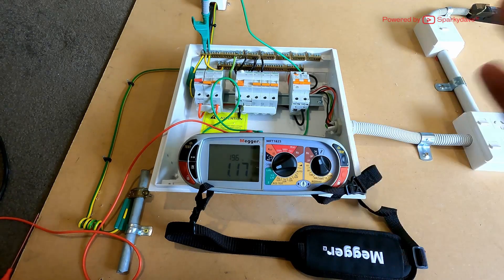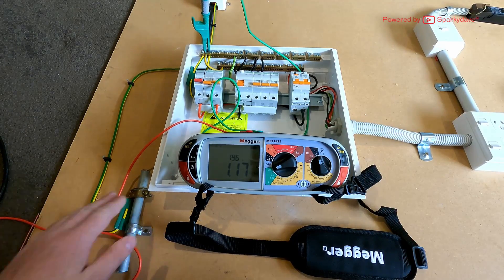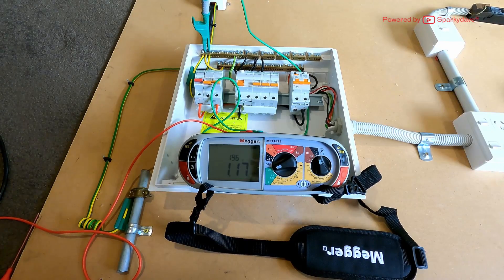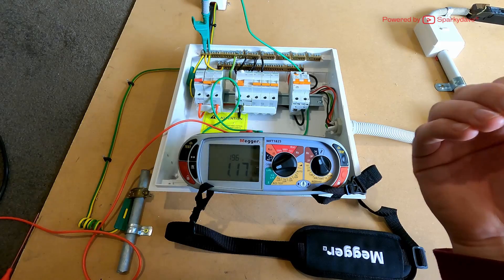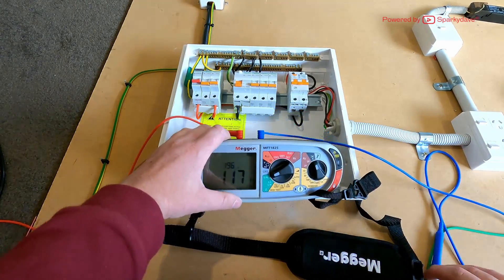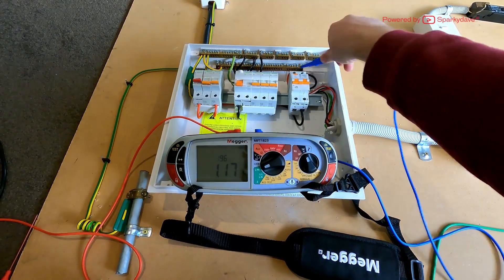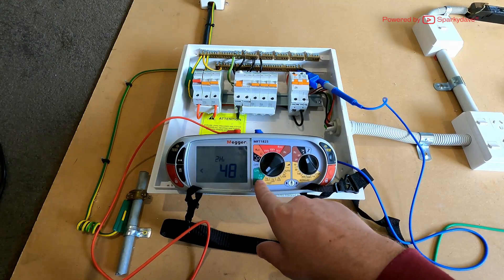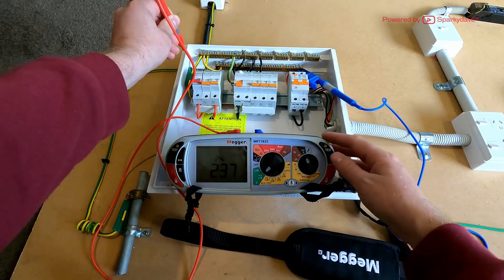But that's expected because of our distance. So the next test we'll be doing is going to be our neutral. We'll be doing our two lead high on the neutral. So we put this one on the neutral bar, change the setting to line to neutral, and we're ready to test.